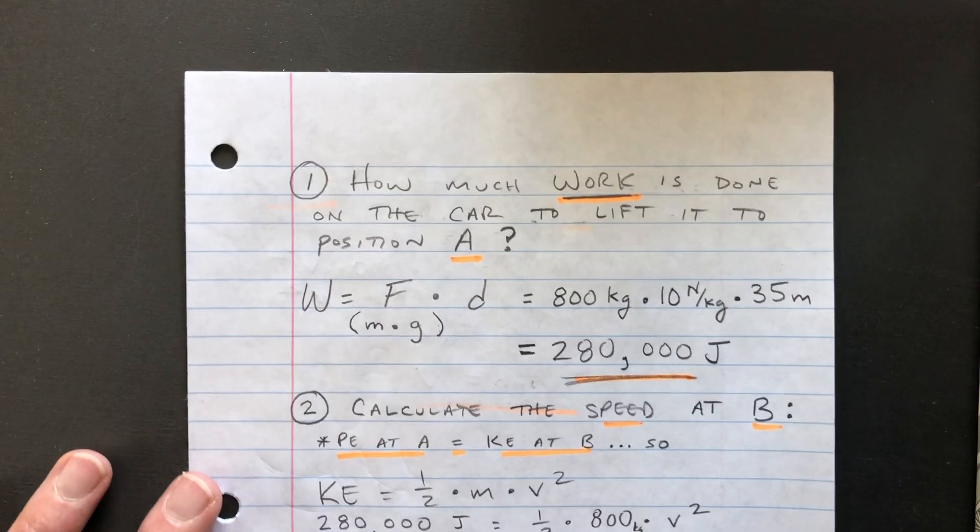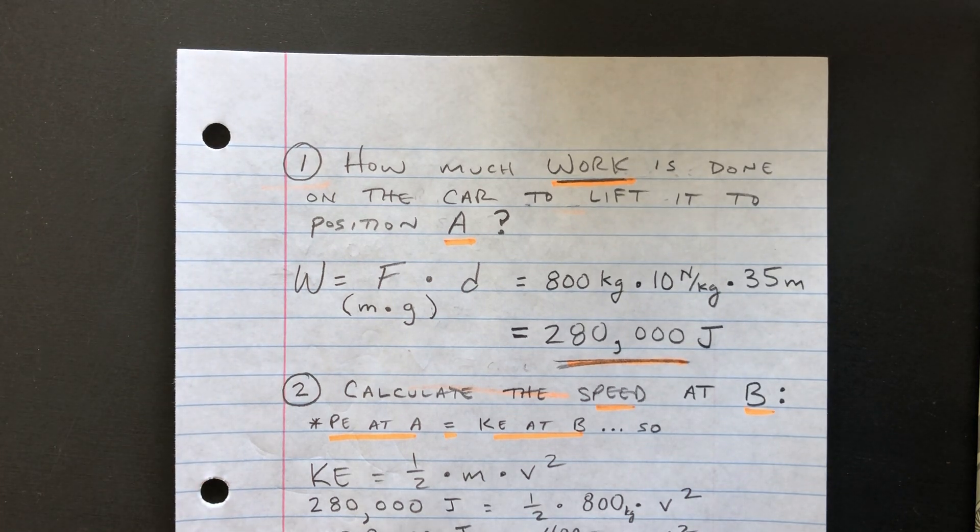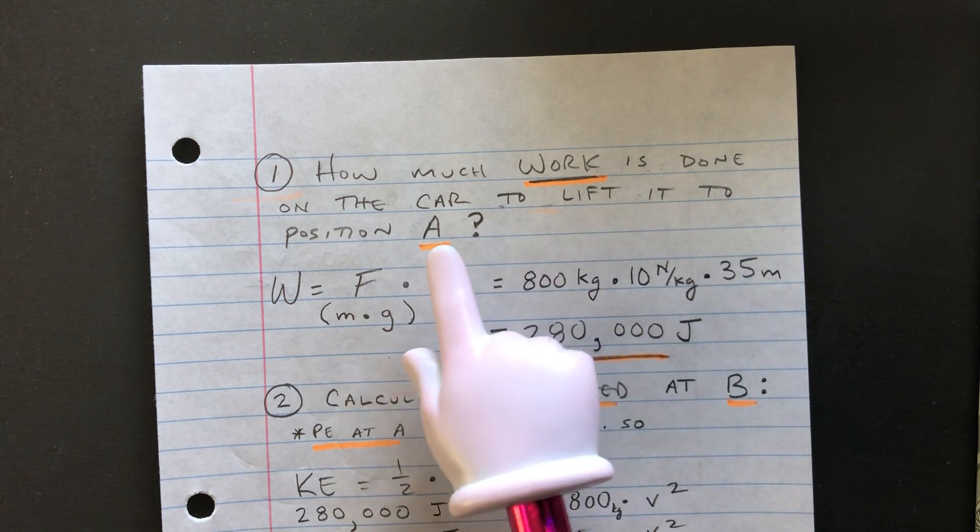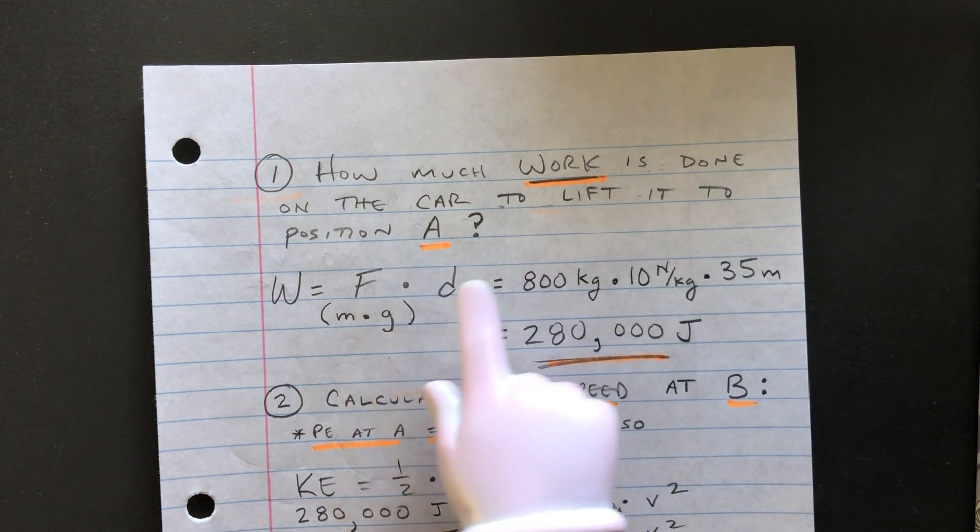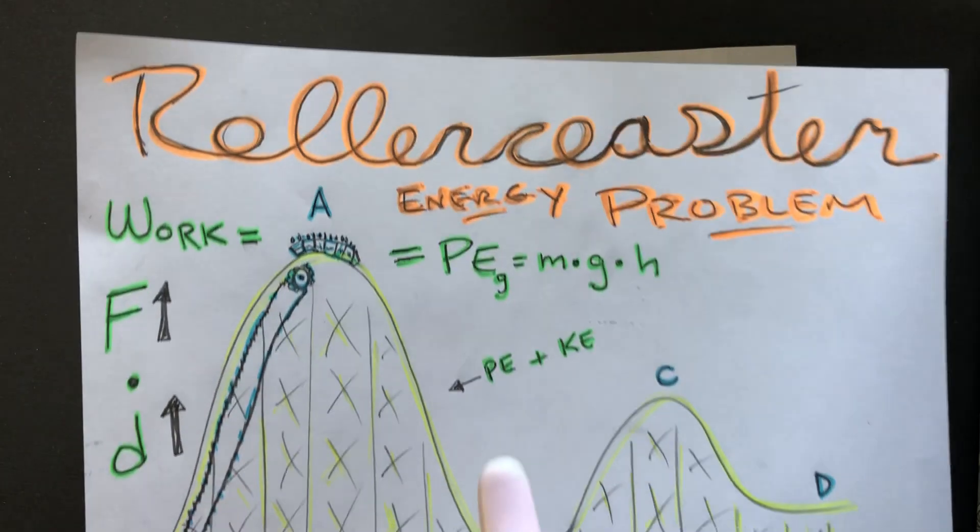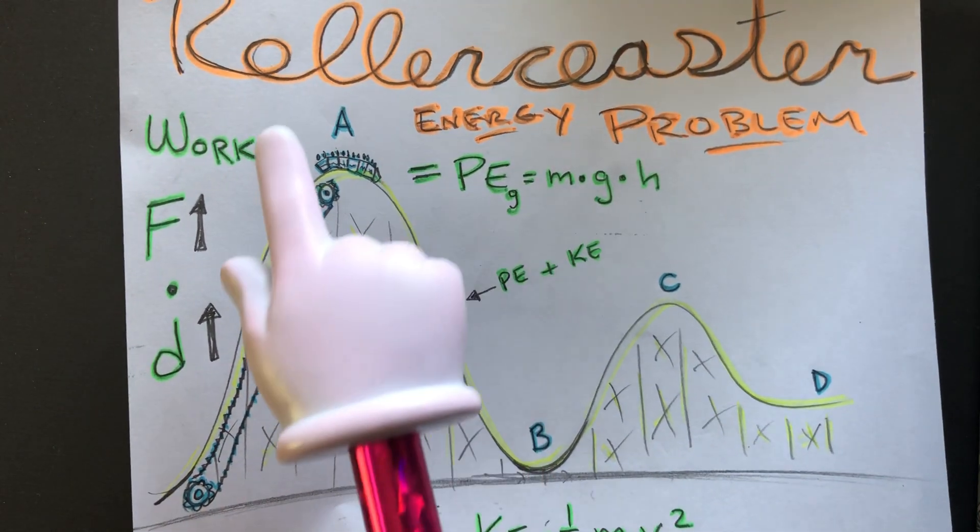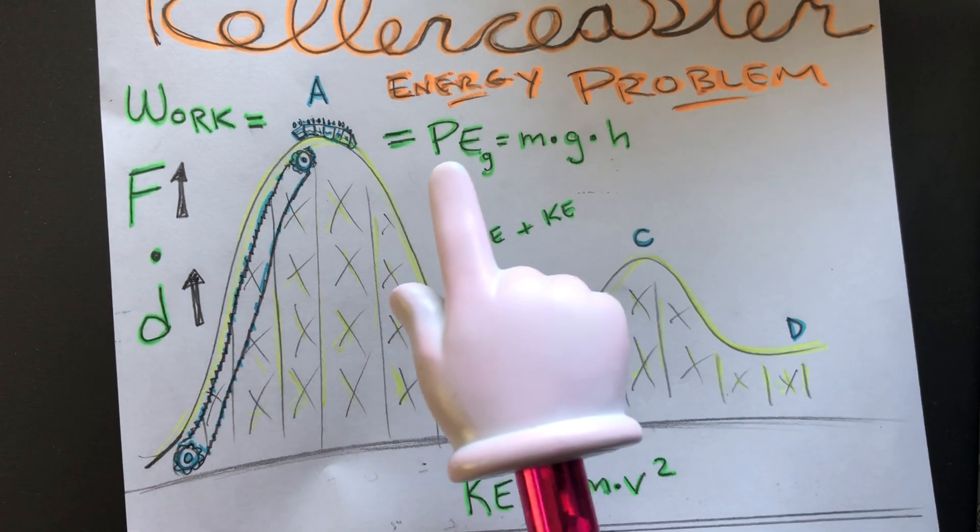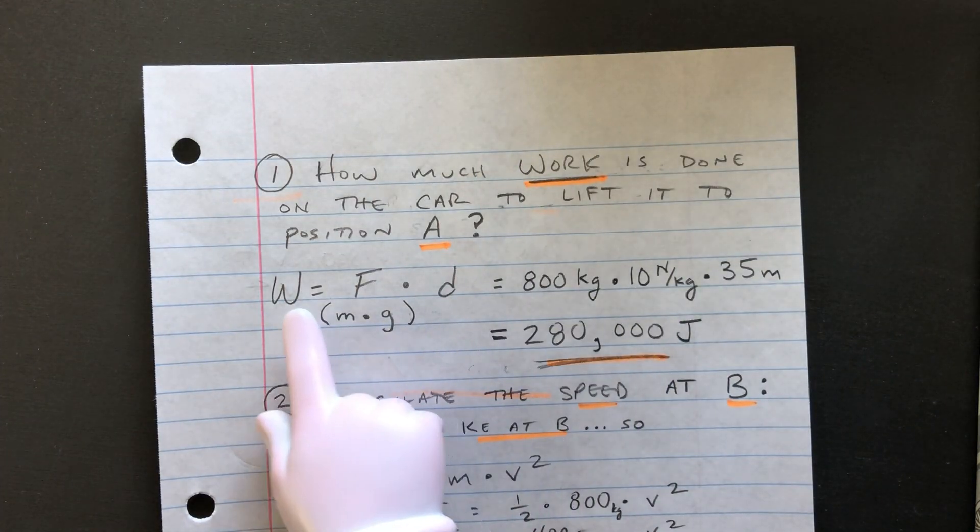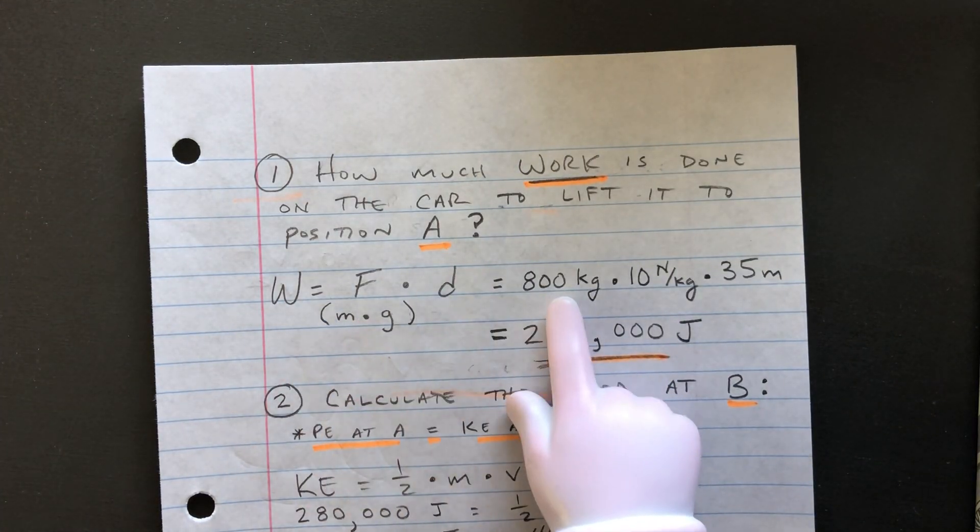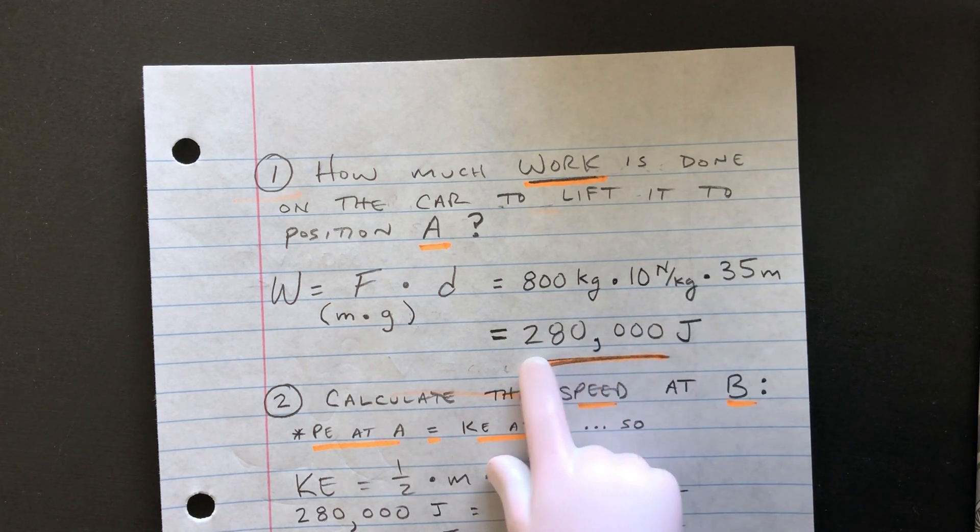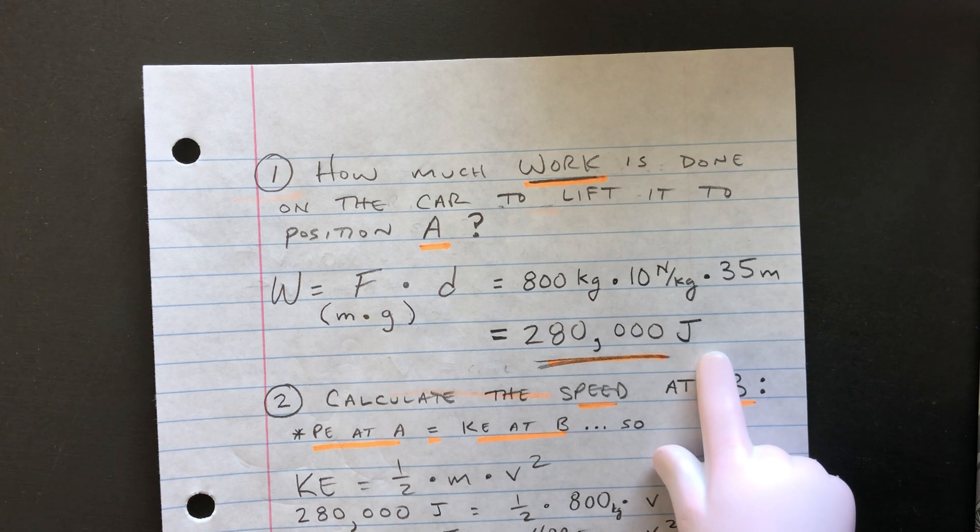So these are the typical type of questions that you'd be asked. For example, how much work is done on the car to lift it to position A. So like I said before, to get to position A here at the top, there has to be work done, force times distance, or basically you're calculating the potential energy. So you would take 800 multiplied by 10 multiplied by 35 and you get 280,000 joules of energy.